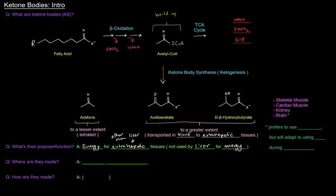I got a little asterisk next to the brain. The reason why is that the brain prefers to use glucose for energy pretty much all the time, but it will adapt to using ketone bodies, which I will abbreviate as KB, during starvation. We'll talk a little bit more about that later.